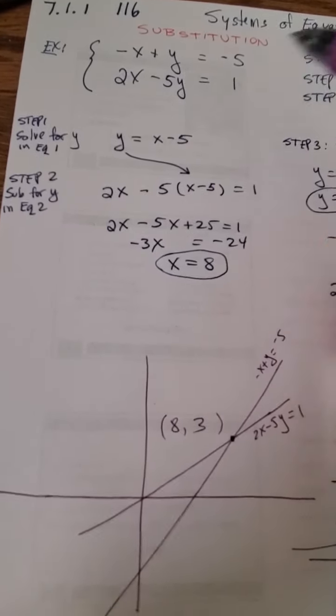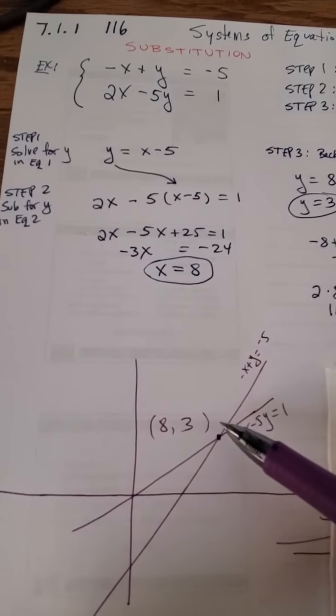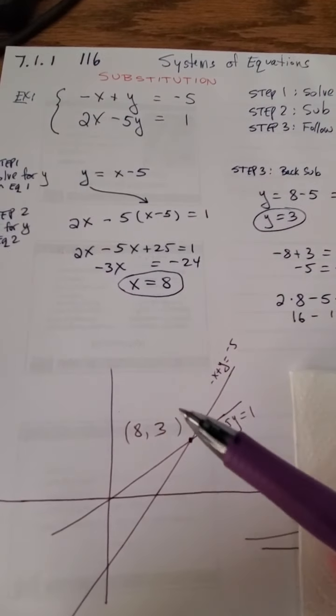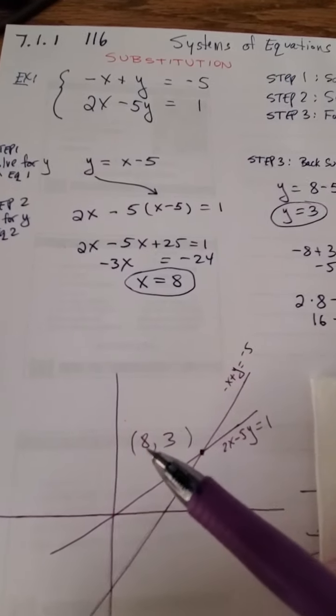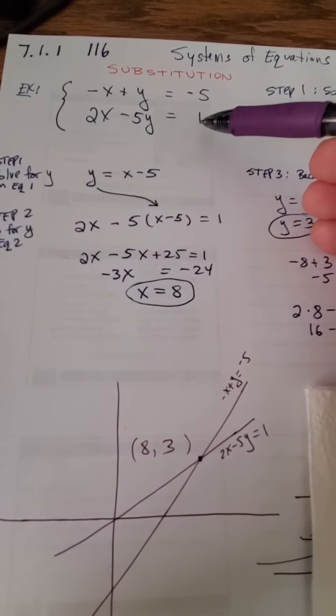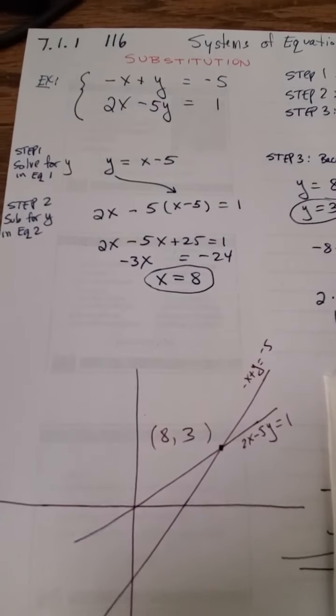Anyway, it means that these two lines - this is the first equation, that happens to be the second equation - these two lines would intersect at the point eight comma three. That's what the solution winds up meaning graphically. That eight comma three would be the intersection of graphing the top line and graphing the bottom line. That's a fact in general for these kind of systems of equations.